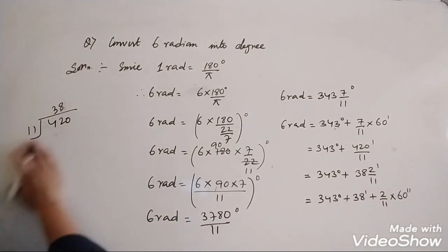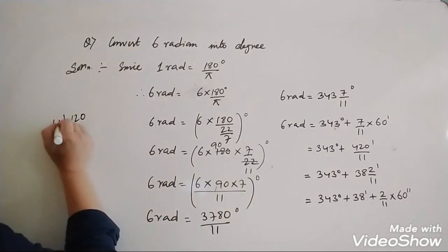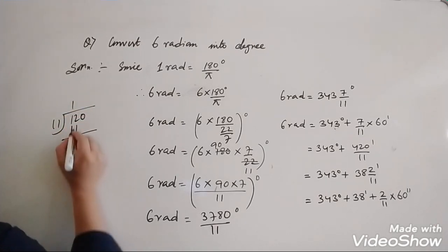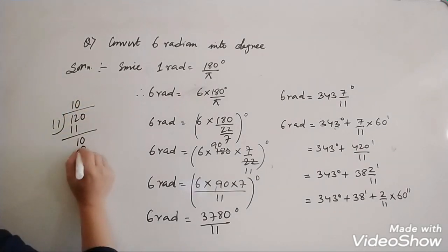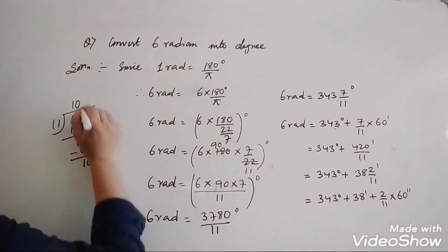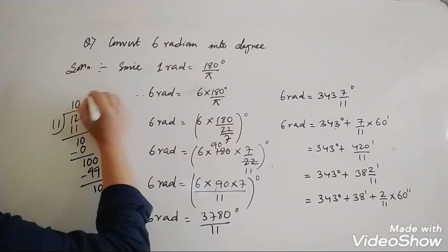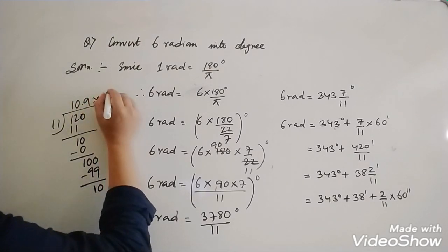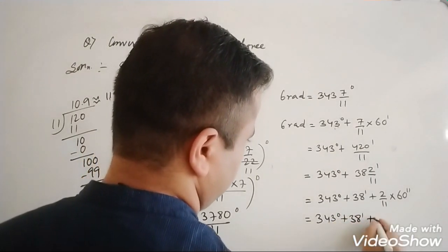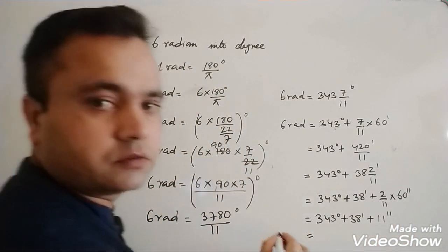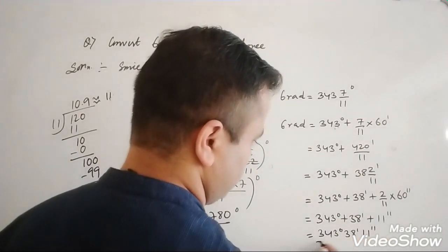2 into 60 is 120, so we have 120 by 11. Dividing 120 by 11: 11 into 12 goes 1 time giving 11; 1 is left; bring down 0 to get 10; put the decimal point; 11 into 10 gives 0.99, which by rounding equals 11. So this equals 343 degrees plus 38 minutes plus 11 seconds. Adding: the answer is 343 degrees 38 minutes 11 seconds.